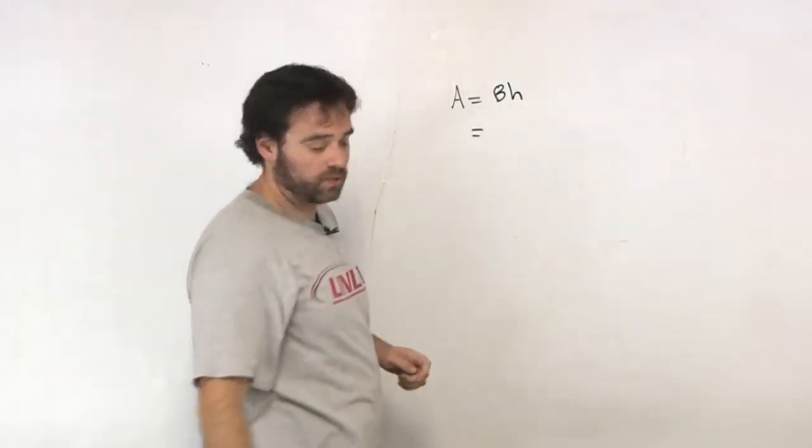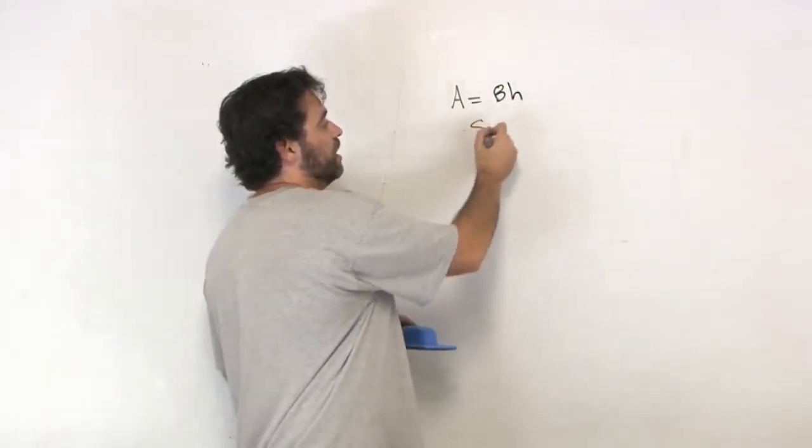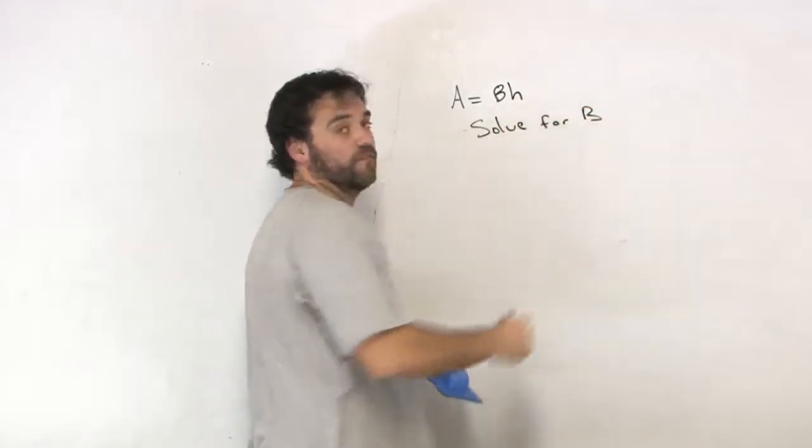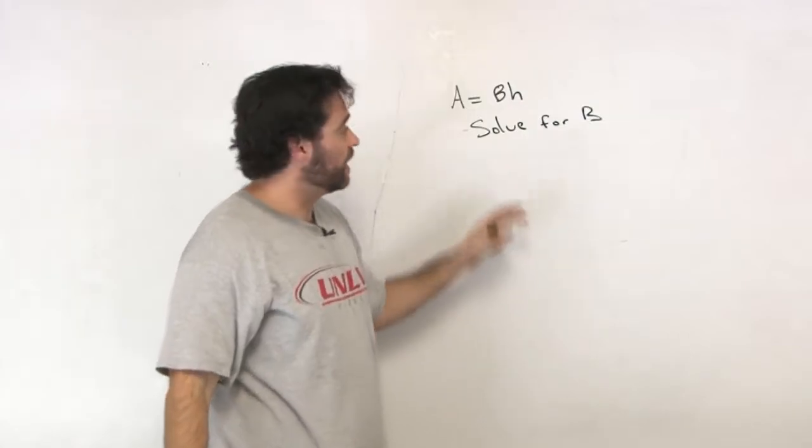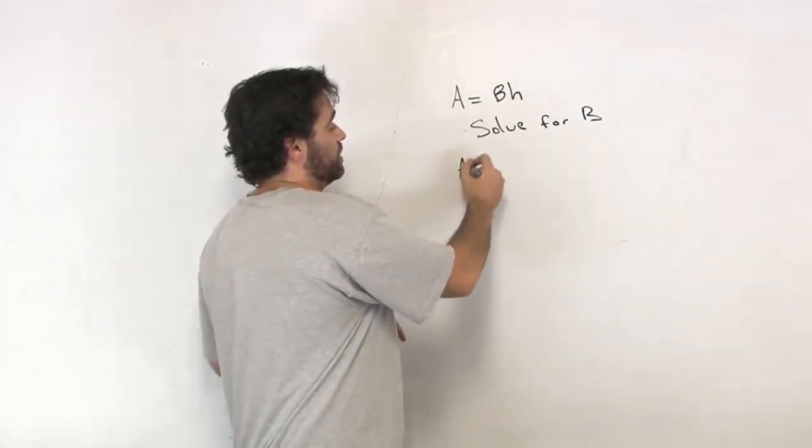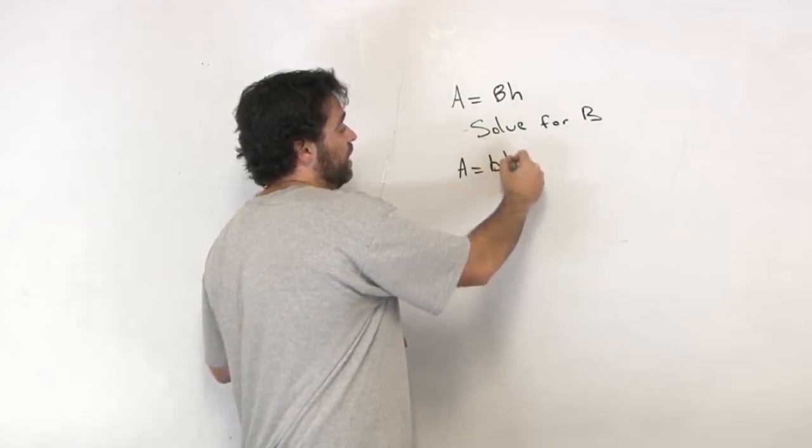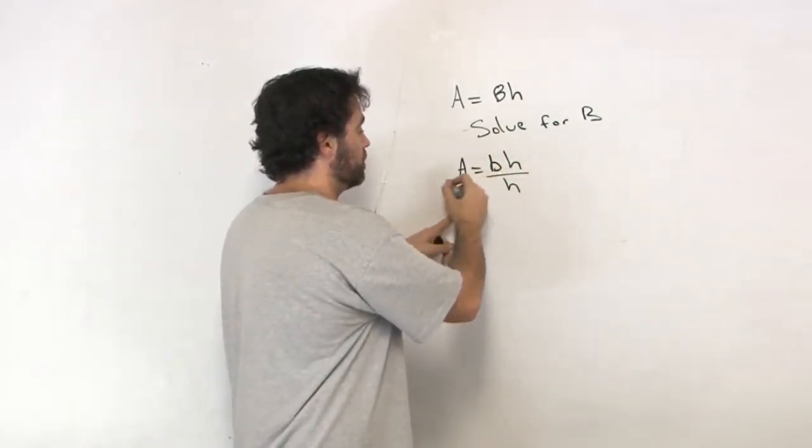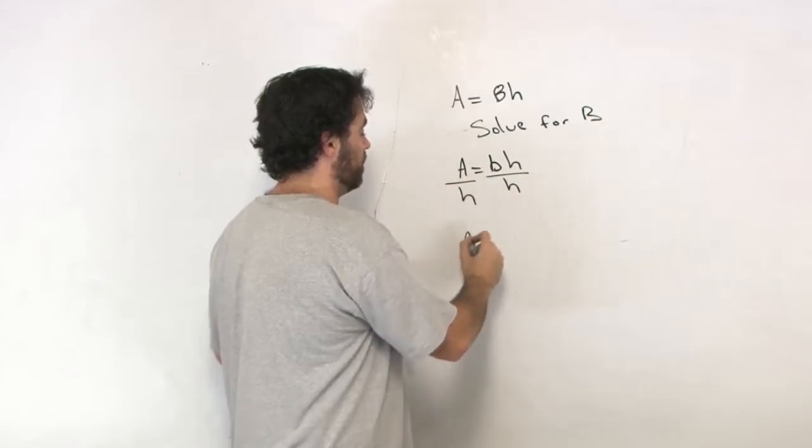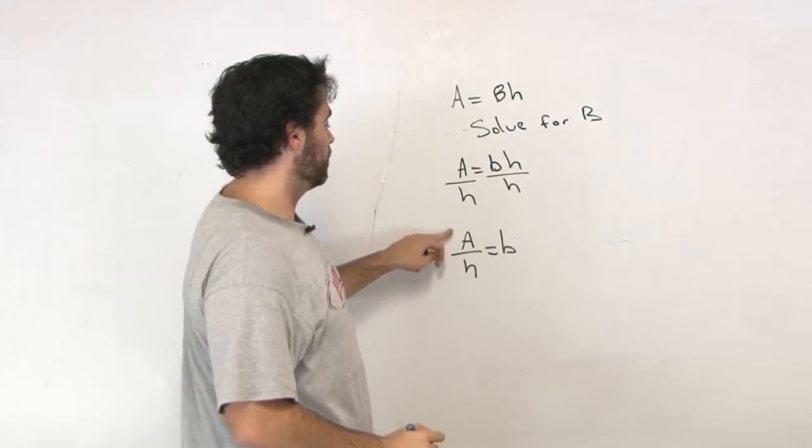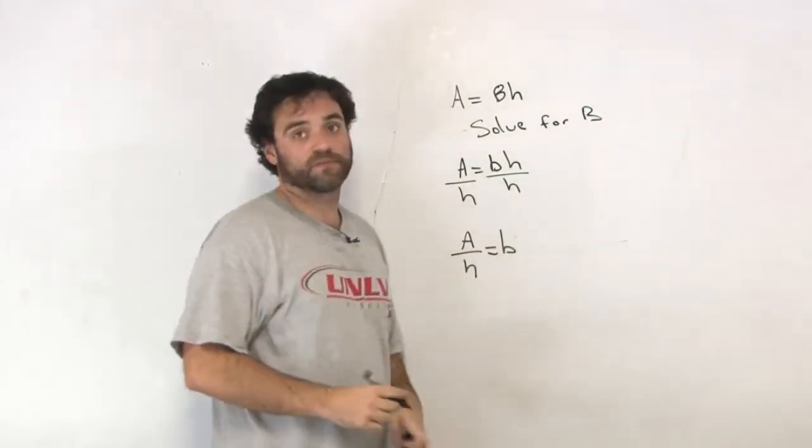And I say to you, let's solve for b. Let's get b by itself. Here's a formula: area of a rectangle is equal to base times height. So we have A equals bh. We want to solve for b. That means we're going to divide out that h. So we get A over h is equal to b. Area divided by the height is equal to the base of a rectangle.